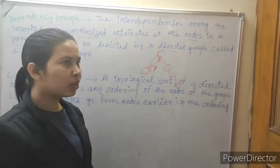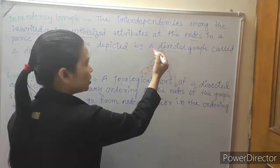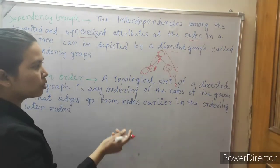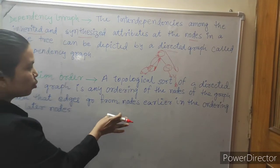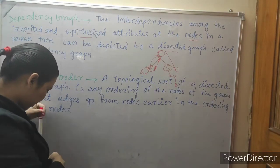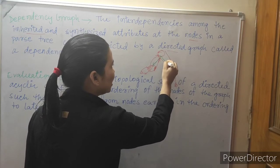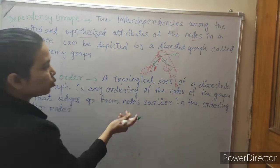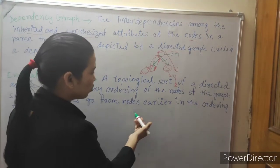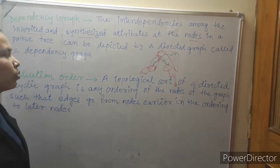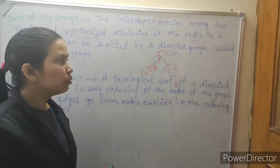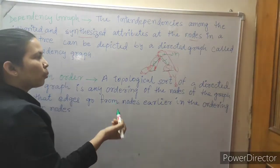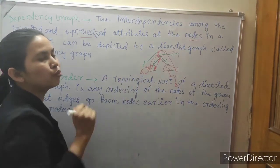Evaluation order is a topological sort of a directed acyclic graph. This is a topological, hierarchical ordering. An acyclic graph has nodes in any ordering such that edges go from nodes earlier in the ordering to a later node. For example, E can go to V, and E can go to S as well — these are the edges and those are the nodes. So evaluation order means we show, through parse tree nodes and edges, a topological sort. The parse tree will generate it in a definite topological order, which is also a tree form.